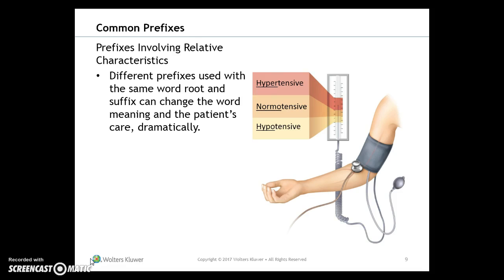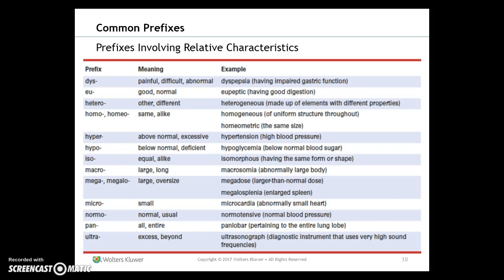Prefixes involving relative characteristics describe a quality or characteristic compared to a normal situation. For example, hypertensive, normotensive, and hypotensive use different prefixes with the same word root and suffix to change the word meaning — and the patient's care — dramatically. It's important to start learning these.